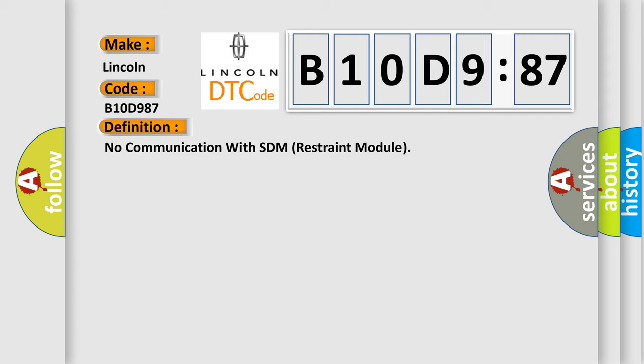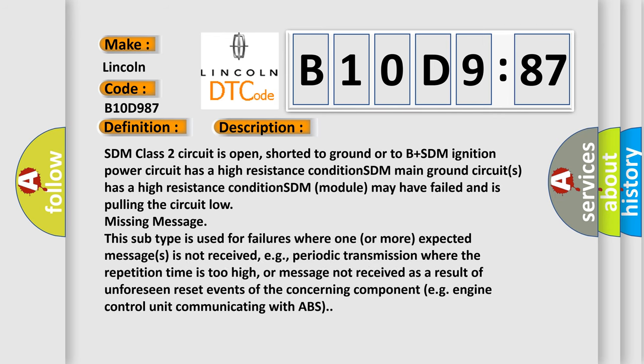And now this is a short description of this DTC code. SDM class 2 circuit is open, shorted to ground or to B plus. SDM ignition power circuit has a high resistance condition. SDM main ground circuits has a high resistance condition. SDM module may have failed and is pulling the circuit low missing message.